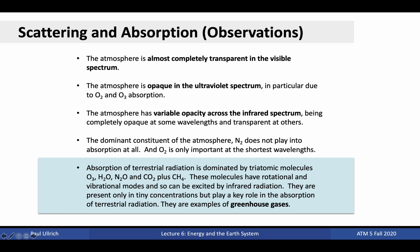Absorption of terrestrial radiation is dominated by triatomic molecules, including ozone, water vapor, nitrous oxide, carbon dioxide, plus methane. These molecules have rotational and vibrational modes and so can be excited by infrared radiation. They are present only in tiny concentrations but play a key role in the absorption of terrestrial radiation. And they are examples of greenhouse gases.